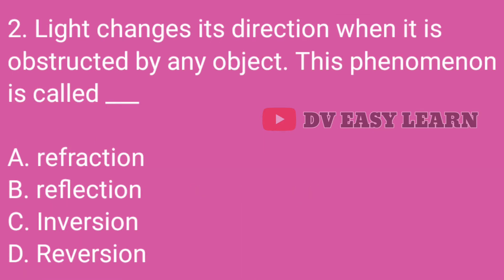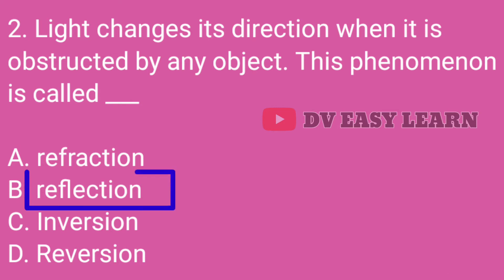Question No. 2: Light changes its direction when it is obstructed by any object. This phenomenon is called — Correct answer: Reflection.